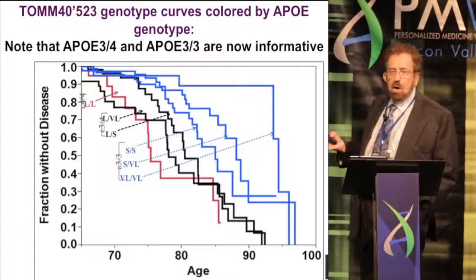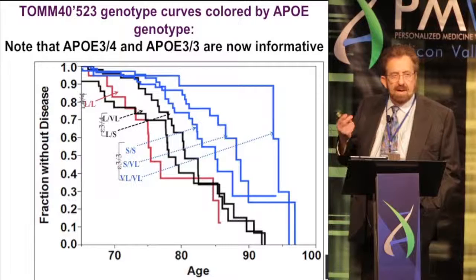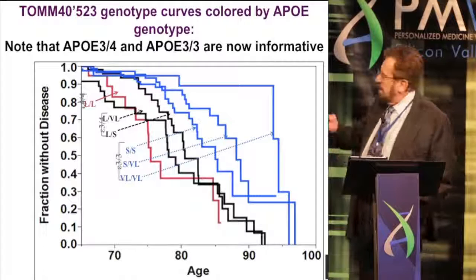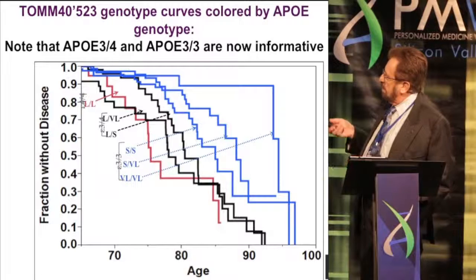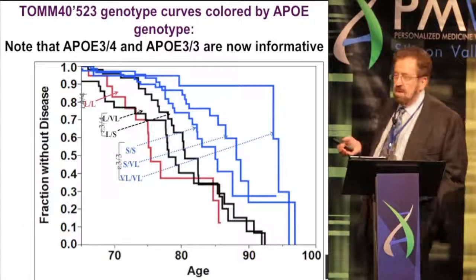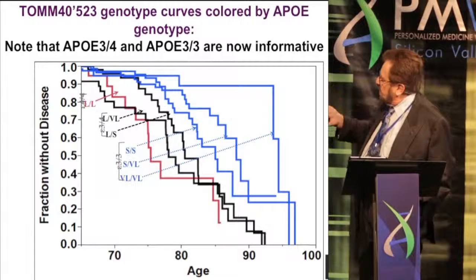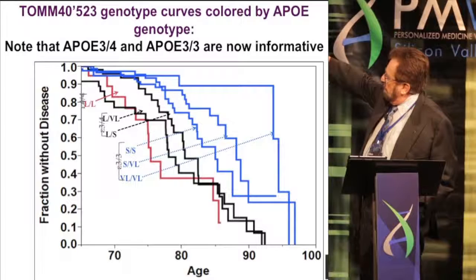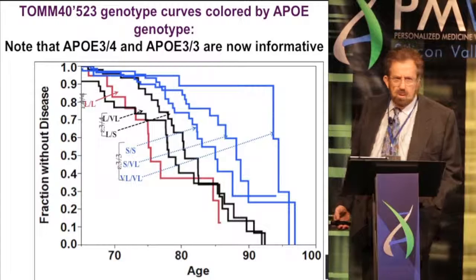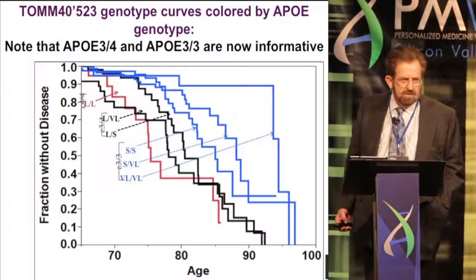If you look at the red line, that's the old E4/E4 line — a long, long line. E3/E4, which is now E4 plus either a short or a long, gives you two age of onset curves in black. 3/3, which represents 60% of the Caucasian population, was totally indistinguishable before, but now you can see the short/short as the earliest line, then short/very long, and then very long/very long. For an N of 1, which one would you want to have if this is the risk for Alzheimer's disease as you grow older?